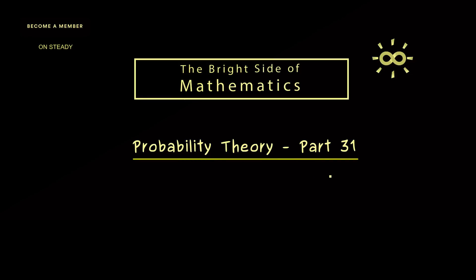And in today's part 31 we will talk about the important and famous central limit theorem. This one tells us that a so-called normal distribution or also called Gaussian distribution plays a central role for calculating averages. And for this reason the normal distribution occurs a lot in applications.